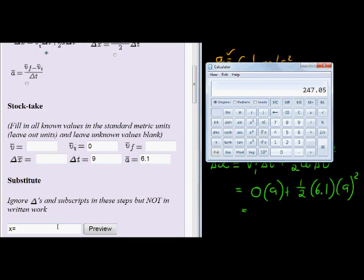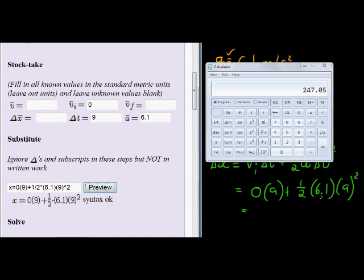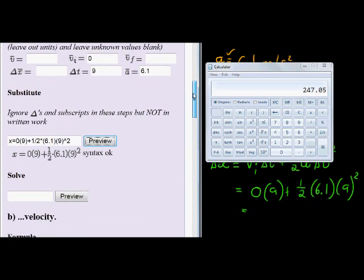That is our final answer. So all we're going to do here is this is the substitution step. Very important to put in all of the values here. We have 0 times 9 plus a half times 6.1 times 9 squared. And let's just always remember to preview, just so that you can make sure you have it correct. That looks like what we have here, so I'm happy.